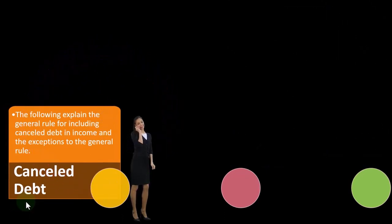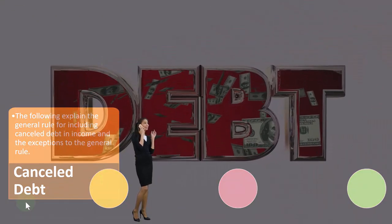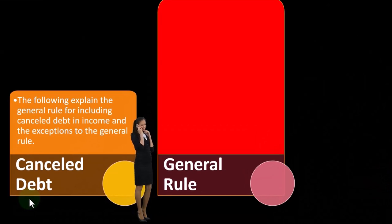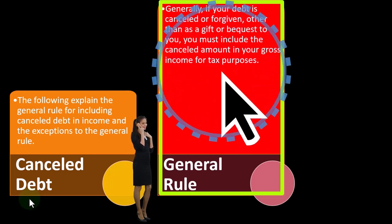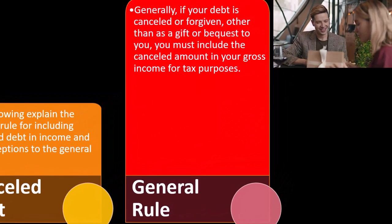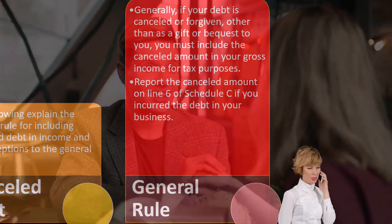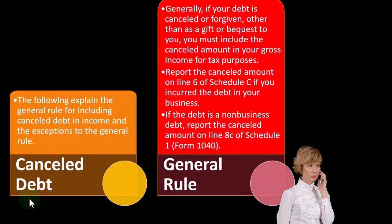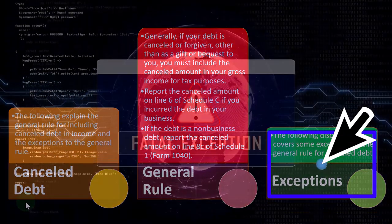You can also imagine situations with exceptions to the general rule, because if someone is canceling the debt it's probably because you're not liquid or in financial difficulties — in which case the canceled debt might be exempt from income. General rule: if your debt is canceled or forgiven other than as a gift or bequest, you must include the canceled amount in gross income. Report it on line 6 of Schedule C for business debt, or line 8c of Schedule 1, Form 1040 for non-business debt.